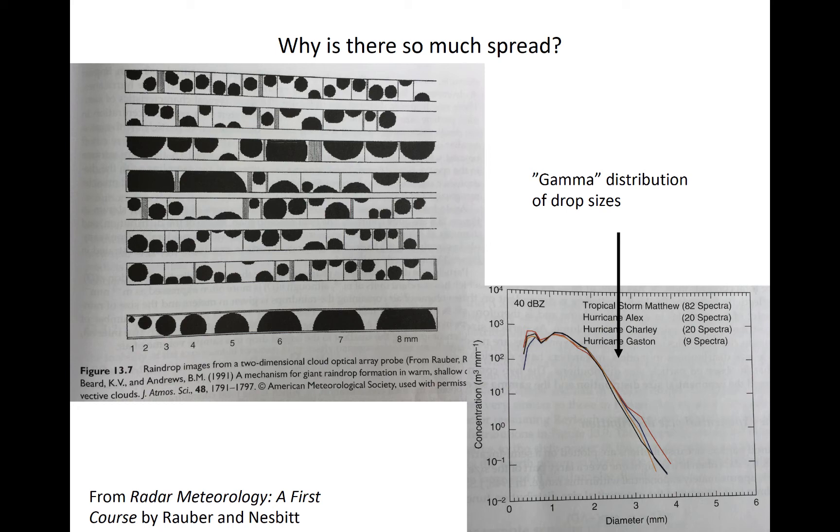But the main point here is that at the tail end of the upper part of the distribution, the number of the largest drops varied, sometimes significantly, between these different storms.